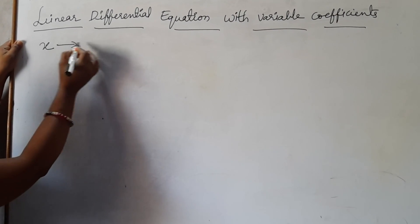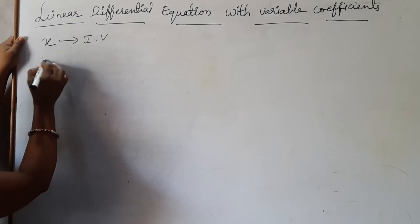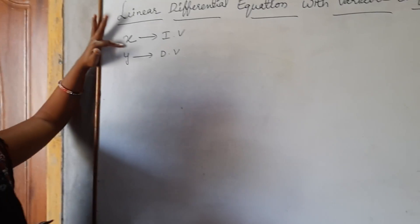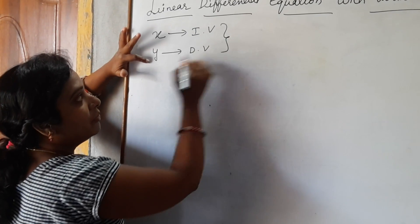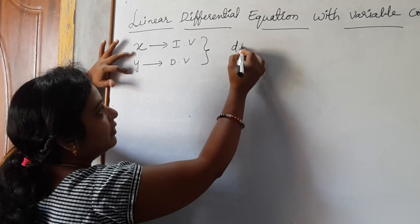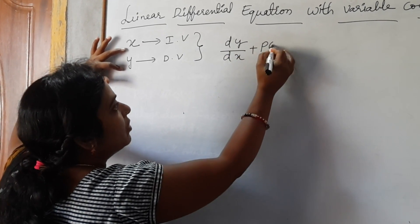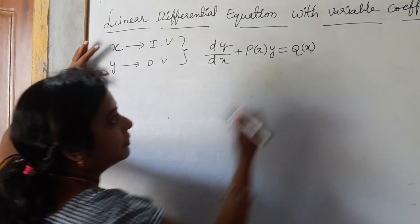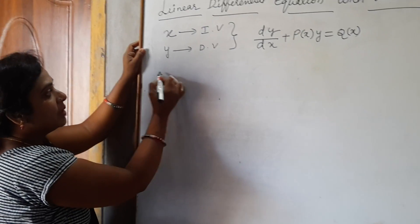In the linear differential equations, the variables are two: one is the independent variable, and the second one is the dependent variable. If we are taking x as the independent variable and y as the dependent variable, by using these two variables, the general form of the linear equation is dy/dx plus P(x) times y equals Q(x).